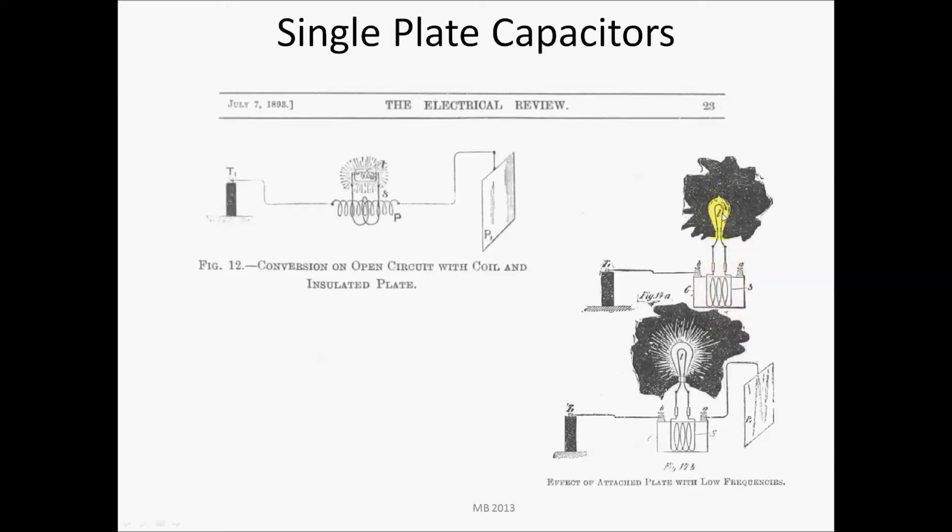The light is off, but with the passive single plate capacitor, this provides a capacitance for the charge to flow through the coil and flow into this capacitor plate.